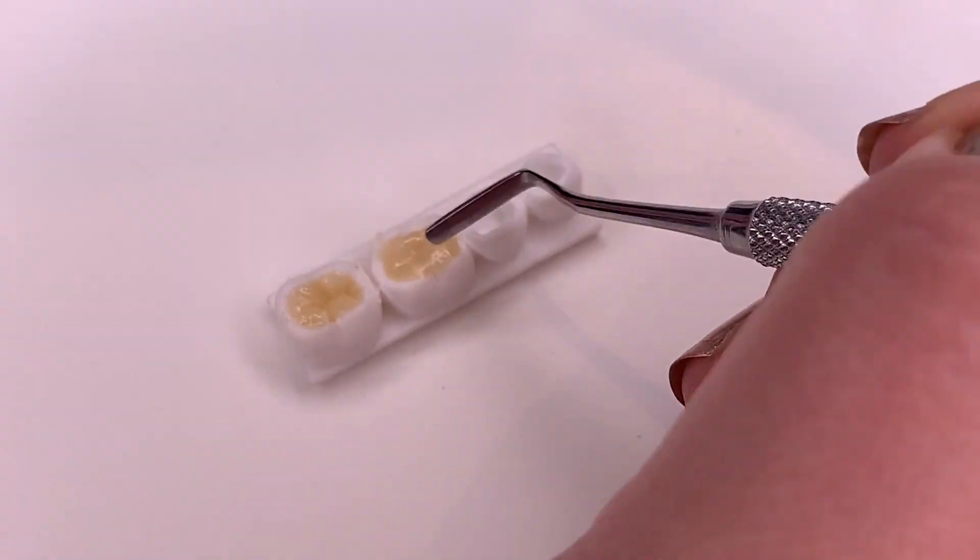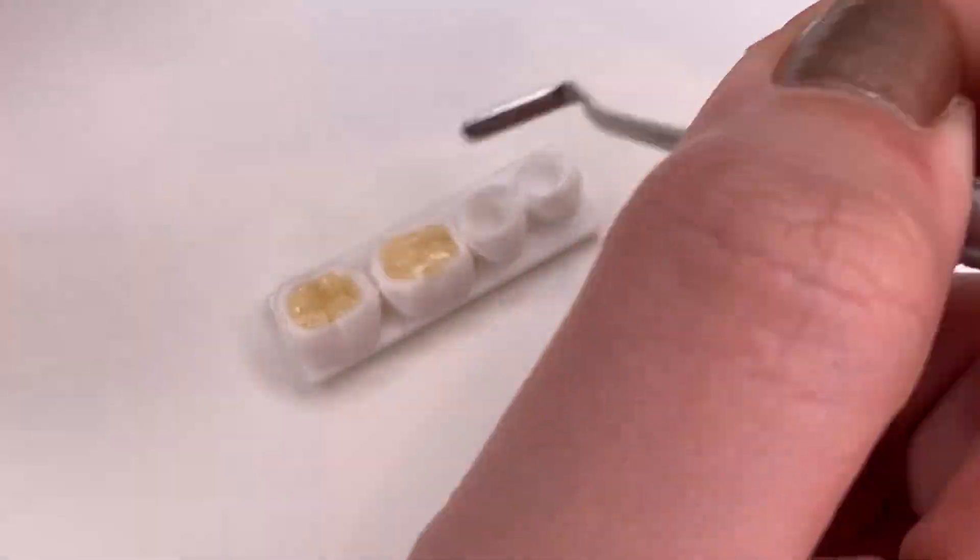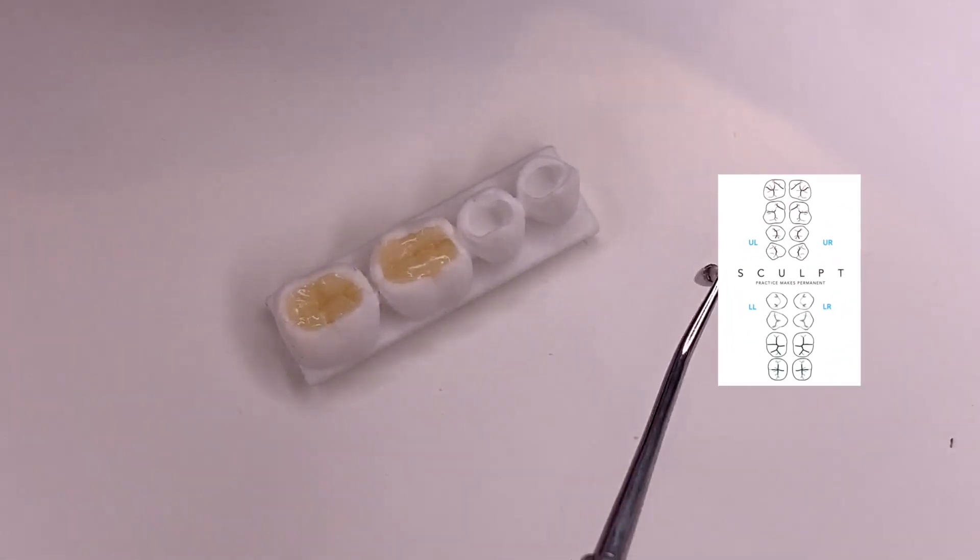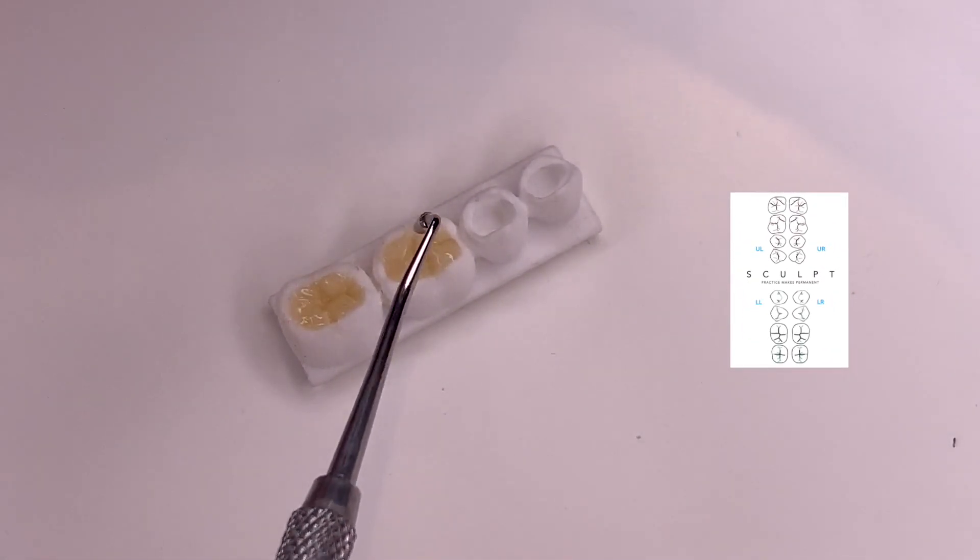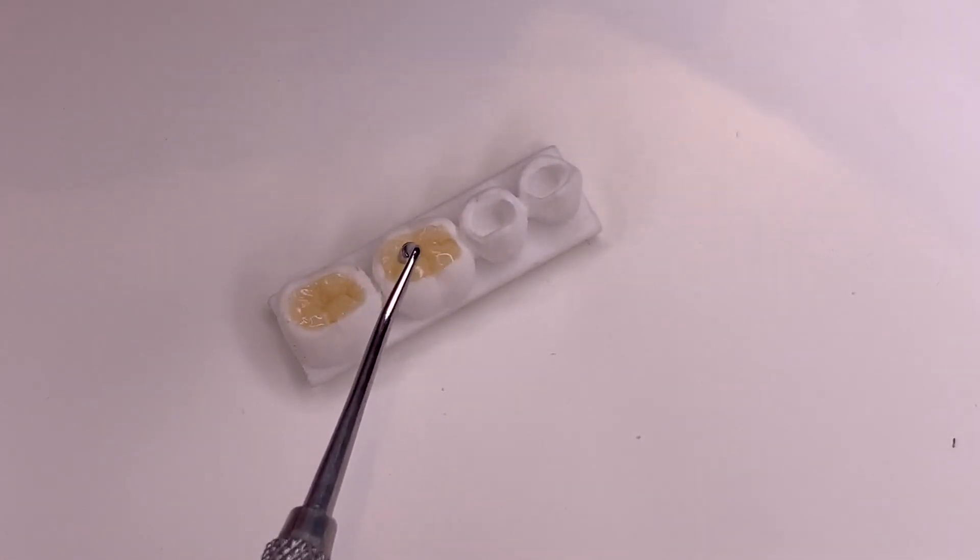For the morphology of the tooth I was using the guide which was included in the pack by Sculpt. What I'm trying to create are the fissures which are the grooves on the biting surface of your back teeth.